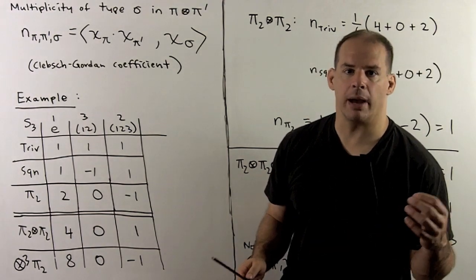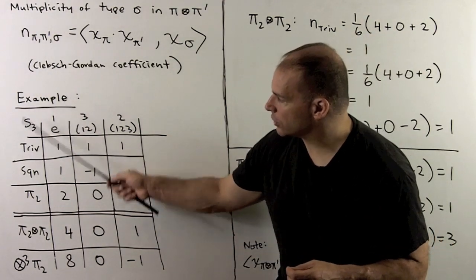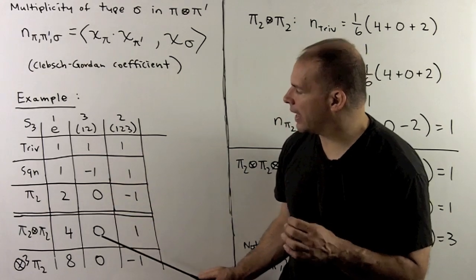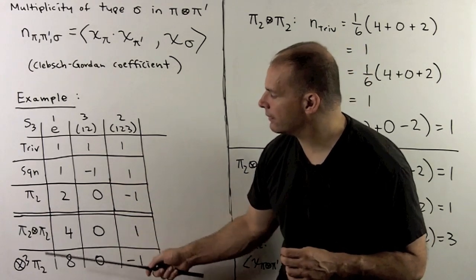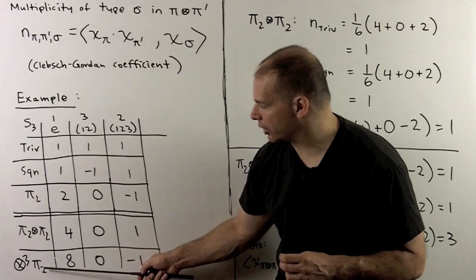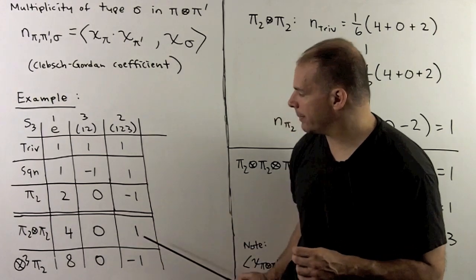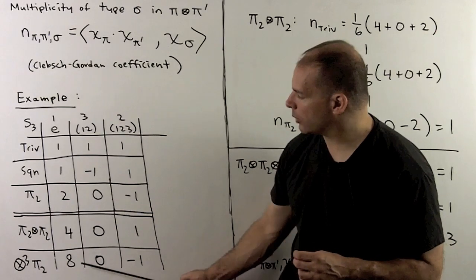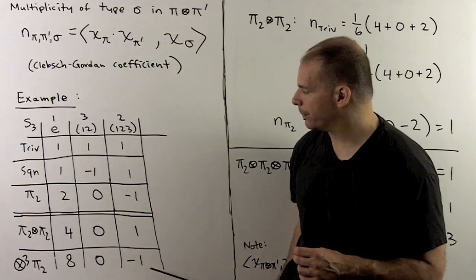For an example, we'll use S3. We set up the character table. I'm going to take the irreducible two-dimensional representation, tensor it with itself, and then do a three-fold tensoring. For the two-fold tensor, we're going to square each entry, so we get 4, 0, 1. For the three-fold tensor, we're going to cube each entry, so we get 8, 0, minus 1.